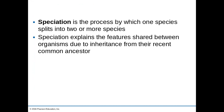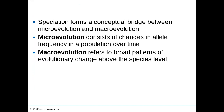Speciation helps explain the idea of descent with modification because many species share features due to a recent common ancestor. But we have to ask ourselves, what is the point where we now have a completely new species? This brings the bridge between microevolution — changes in allele frequencies — to macroevolution, which is where we see broad changes in patterns at the evolutionary level of a species.